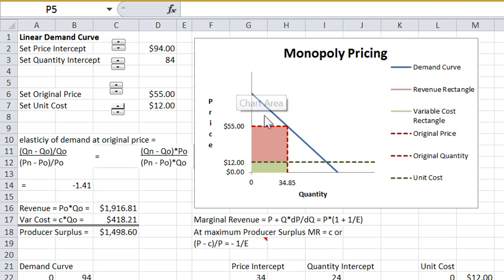We have a diagram that's similar to the one we had before with the linear demand curve. Here's the revenue rectangle if the price is set at $55. We have the controls to set the price intercept and the quantity intercept. I have them set a little bit differently. So let's just look at what's new.